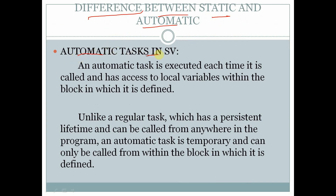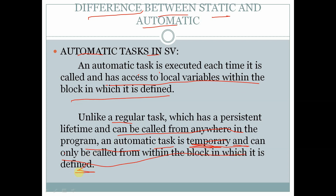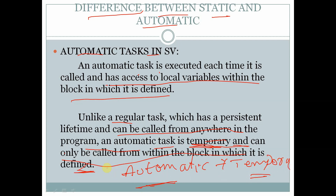Coming to automatic tasks in SystemVerilog — an automatic task is executed each time it is called and has access to local variables within the block in which it is defined. Unlike a regular task which has a persistent lifetime and can be called from anywhere in the program, an automatic task is temporary and can only be called from within the block in which it is defined. When we call an automatic task, it will execute and then gets deleted, whereas a normal task will remain permanent until the program gets terminated.